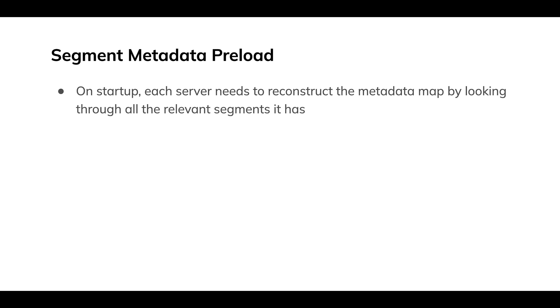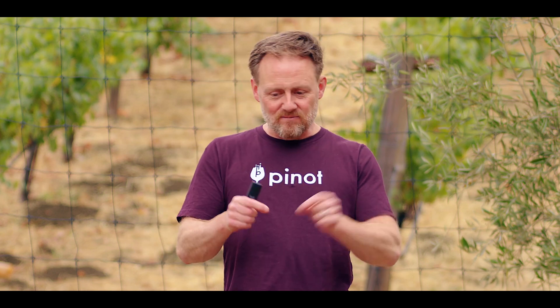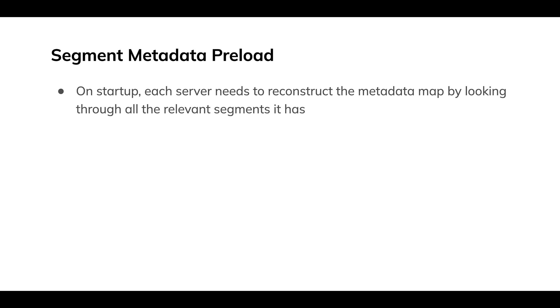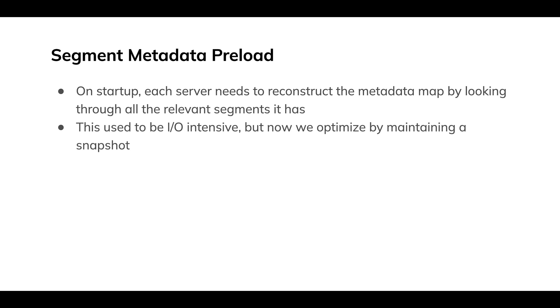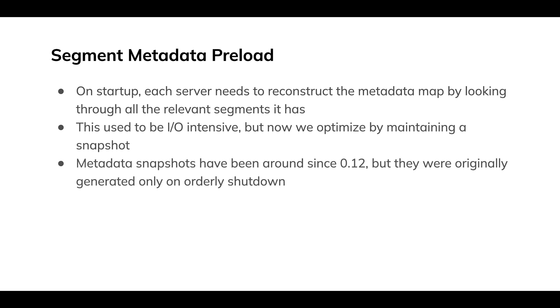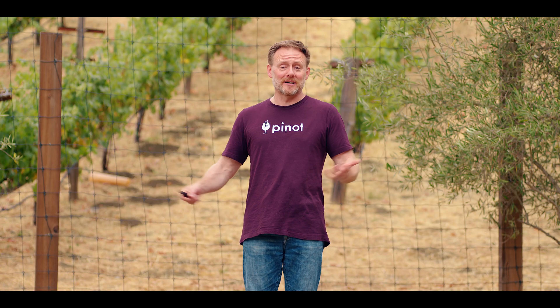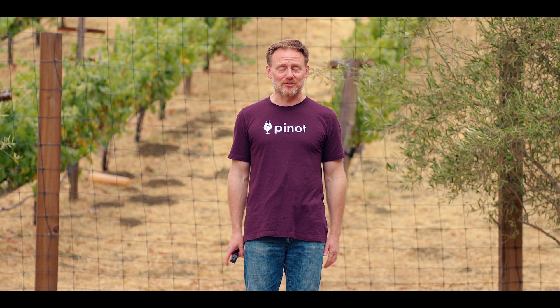Let's look at segment metadata preload. When a server starts up, it has to reconstitute its metadata map. The naive way of doing that would be to look through every segment, find the newest version of each key, and just scan through — that's going to take a long time. The more data you're storing on a particular server, the longer your startup time is going to be. That's how it's worked traditionally. Metadata snapshots — keeping a snapshot of that metadata map — have been around since 0.12, but they used to only be written on orderly shutdown. Sometimes you don't shut down in an orderly fashion; sometimes you just die. So they weren't a reliable mechanism for this purpose.